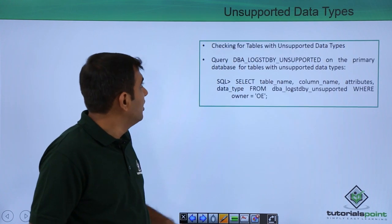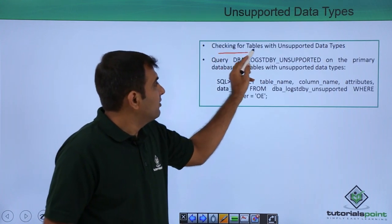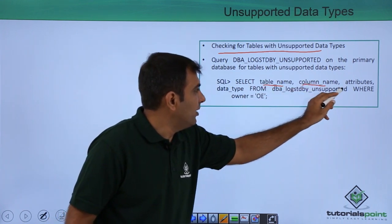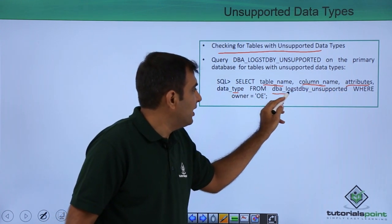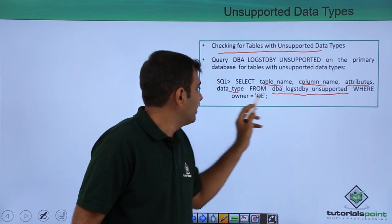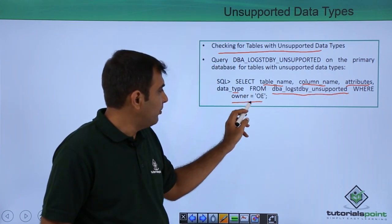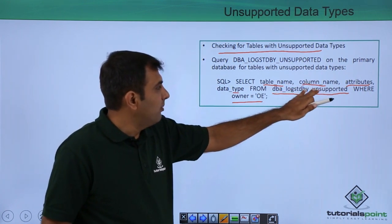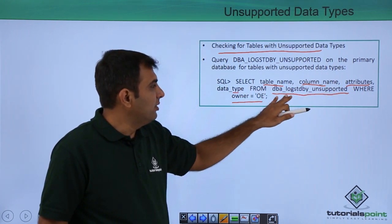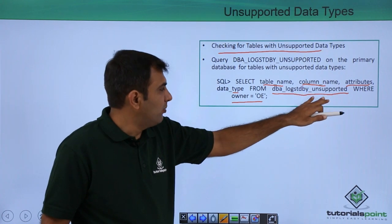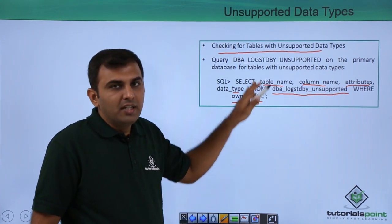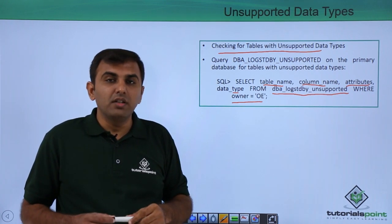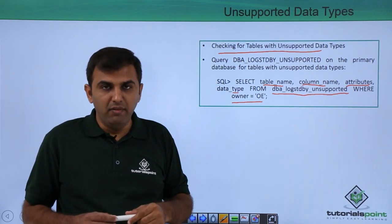To check for tables with unsupported data types, query DBA_LOGICAL_STANDBY_UNSUPPORTED for table name, column name, attribute, and data type: SELECT table_name, column_name, attribute, data_type FROM DBA_LOGICAL_STANDBY_UNSUPPORTED WHERE owner = 'OE'. You can run this for the OE schema, Scott schema, or any user to identify tables with unsupported data types in your logical standby environment.